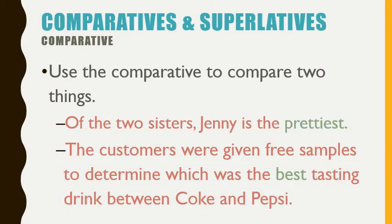Remember to use the comparative to compare two things. It's a very simple rule but you can lose track in a long sentence, and so even on the SAT these questions appear quite often. Look at the sentence: 'Of the two sisters, Jenny is the prettiest' — which is incorrect, because there are only two. Jenny is not the prettiest; she's the prettier of the two. It's easy to see here, but if that sentence were five lines long you would lose track.